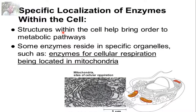For example, the enzymes of the citric acid cycle are present in the mitochondria. The enzymes of the glycolytic pathway are present in the cytoplasm, and the enzymes of the electron transport chain are present in the ETS complexes, while transport proteins are present in the cell membranes. The specific localization of enzymes within the cell helps bring order to metabolic pathways. Some enzymes reside in specific organelles, such as enzymes of cellular respiration which are located in the mitochondria.